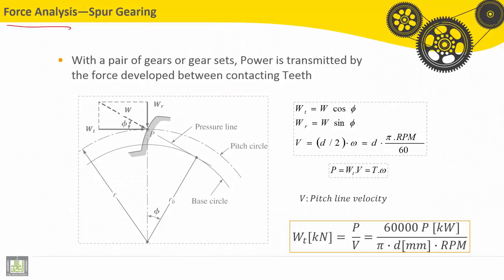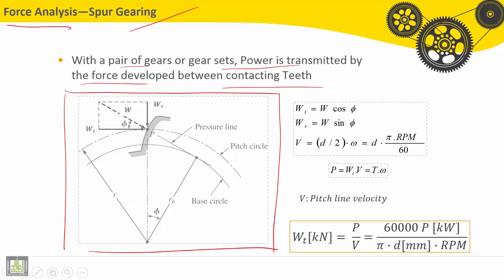I will present here force analysis and start by spur gearing. With a pair of gears or gear sets, power is transmitted by the way of forces developed between contracting teeth. This figure presents the force distribution on one tooth.